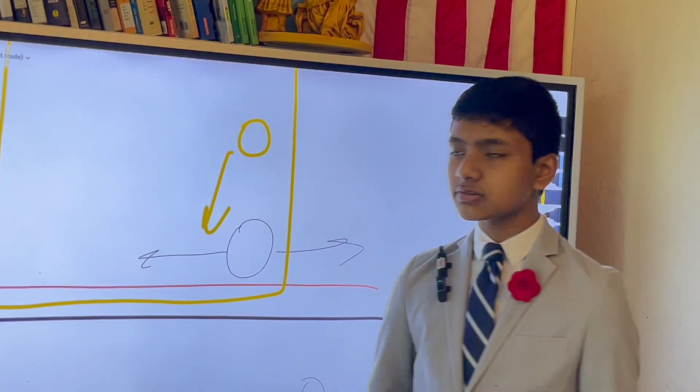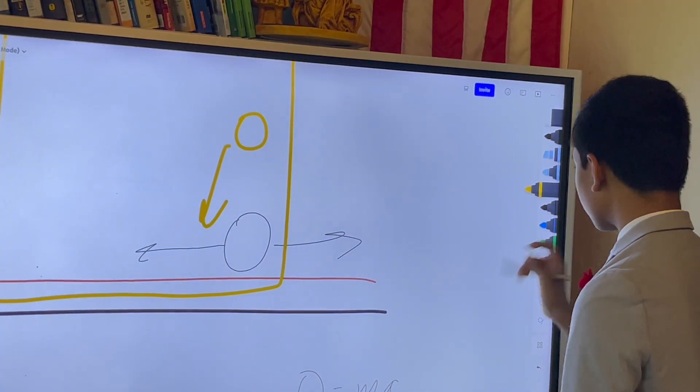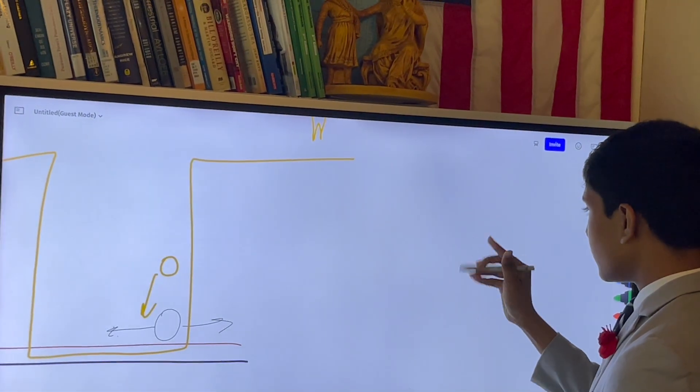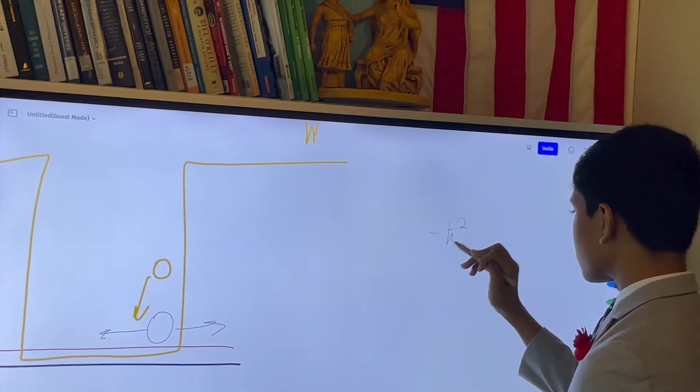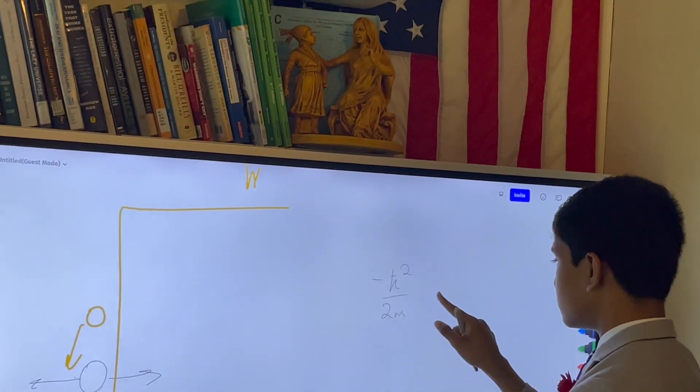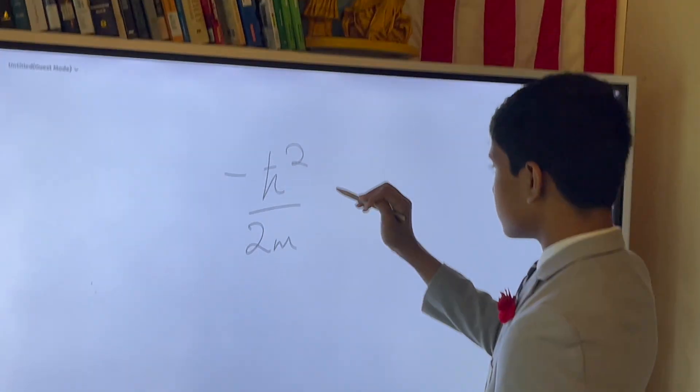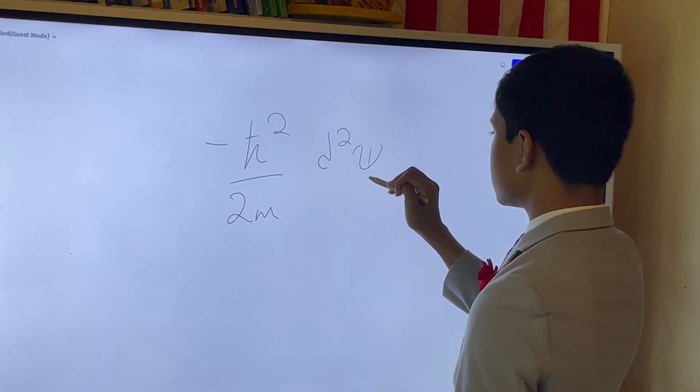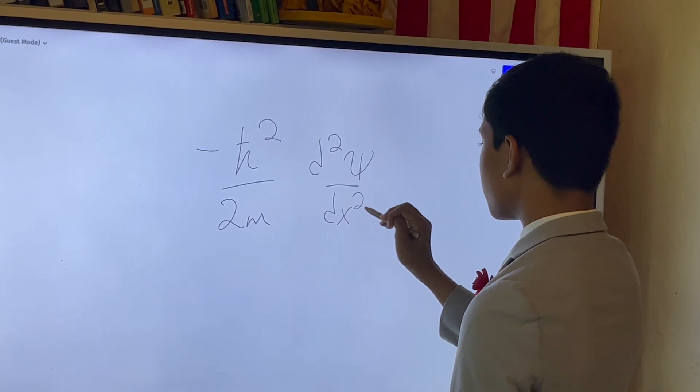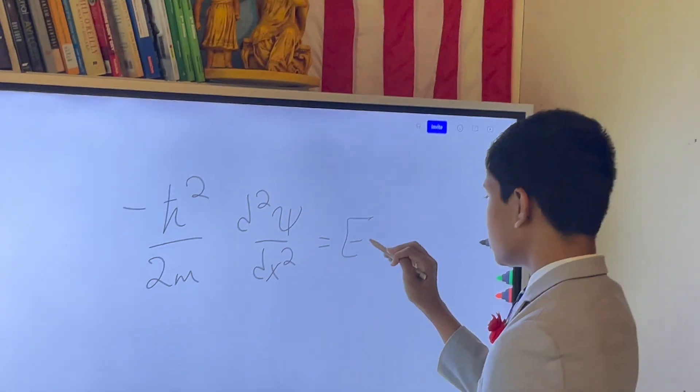So, just as a reminder, let's try to solve this for the free particle. You get minus h bar squared over 2m multiplied by d squared psi dx squared is equal to E psi.